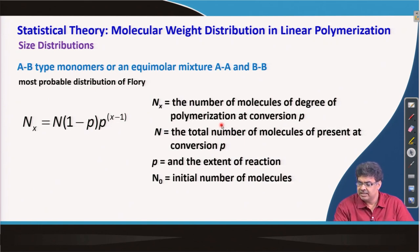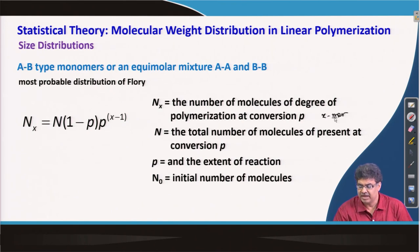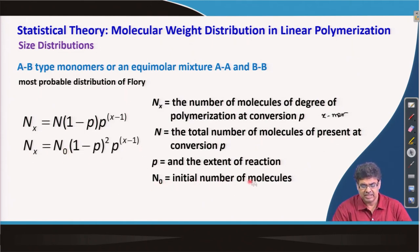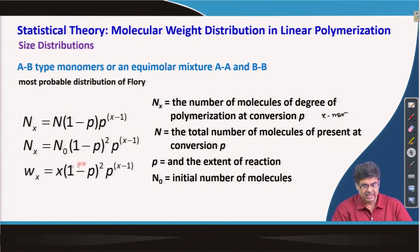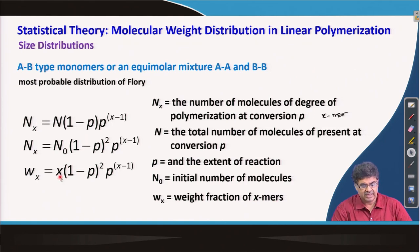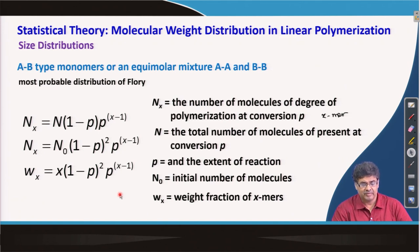N_x is the number of x-mer molecules. Similarly, using N_0 — the initial number of molecules — we get a related expression, where N_0 is the initial number and N is the total number of molecules at conversion p. W_x is the weight fraction of the x-mer, and x is the degree of polymerization value: for a dimer x = 2, for an octamer x = 8, and so on. This expression can be used to calculate the mole fraction or weight fraction of a particular x-mer in the reaction mixture.